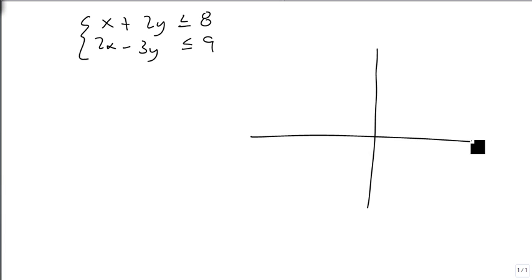So let's start with an example. Suppose we have a system: x plus 2y is less than or equal to 8, and 2x minus 3y is less than or equal to 9. And so we're going to graph these on a real number line.